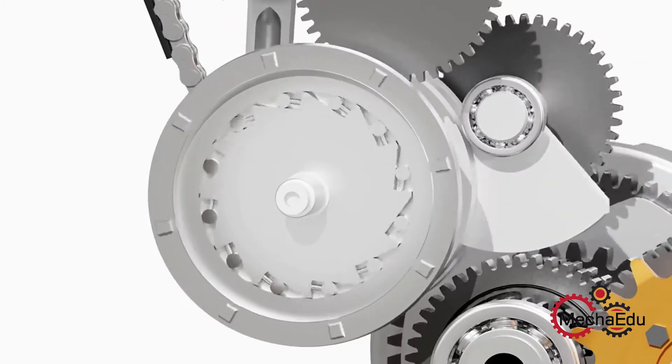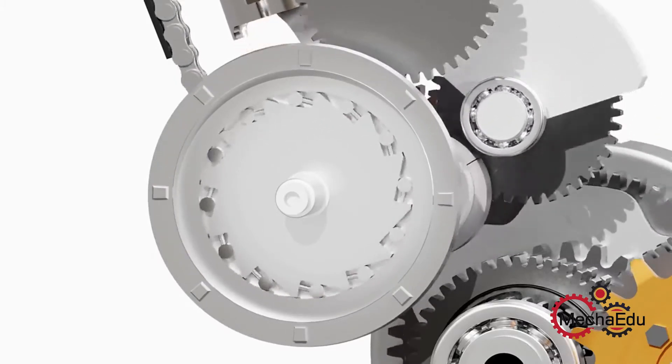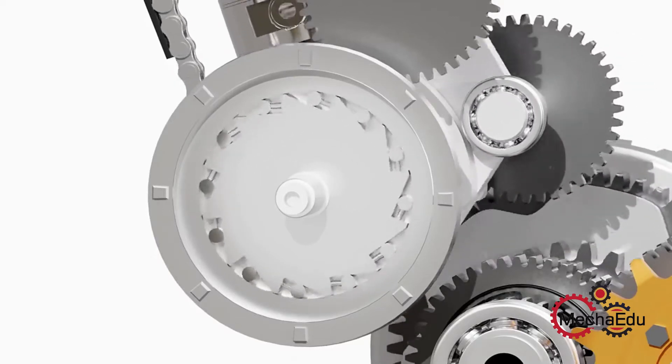Once the inner race starts spinning faster than the outer race, the rollers get released, causing the inner race to spin freely.